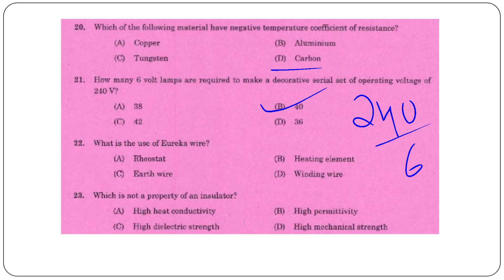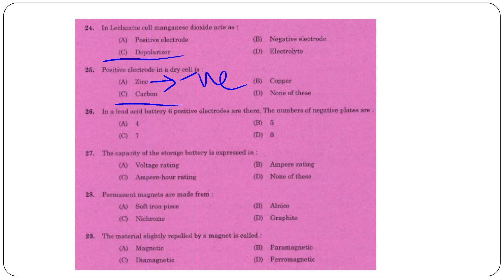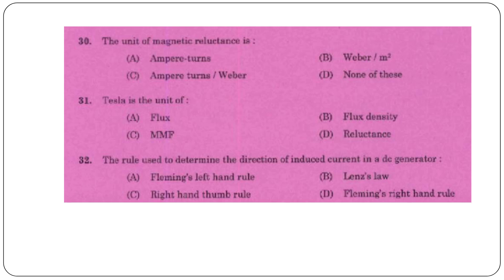Eureka wire is used in rheostats. High permittivity is not a property of an insulator. In a Leclanché cell, manganese dioxide is the depolarizer. In a dry cell, the positive electrode is carbon and the negative electrode is zinc. In a lead acid battery with 6 positive plates, the number of negative plates is 7. Capacity of storage batteries is expressed in ampere-hour rating. Permanent magnets are made from Alnico. Slightly repelled materials are diamagnetic; slightly attracted are paramagnetic; strongly attracted are ferromagnetic.